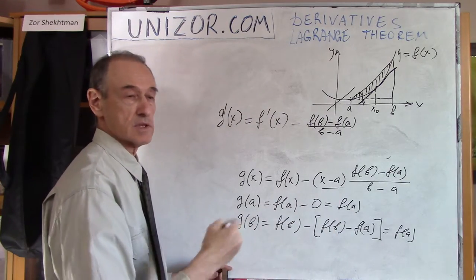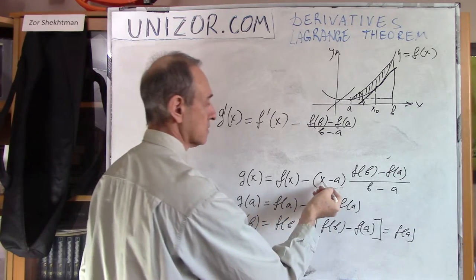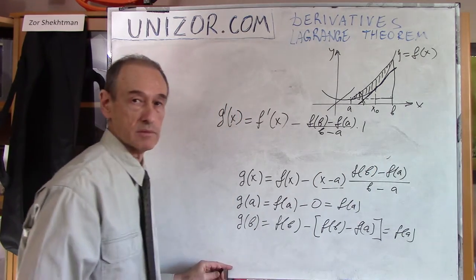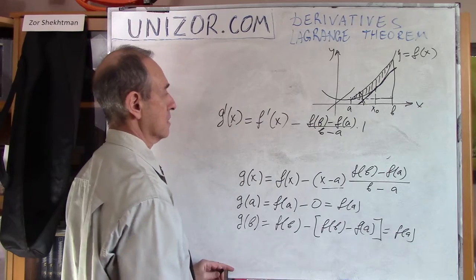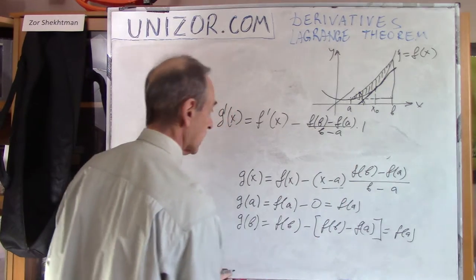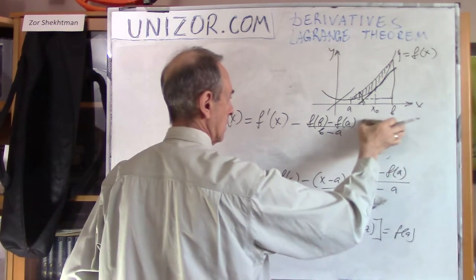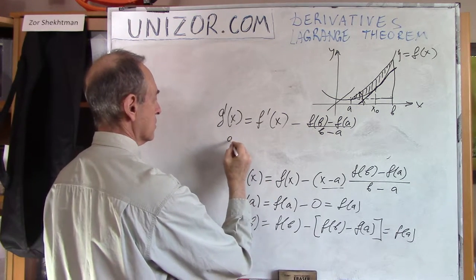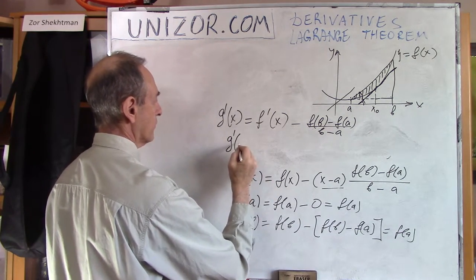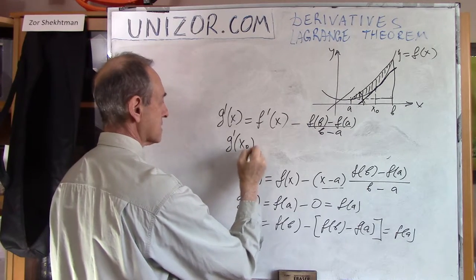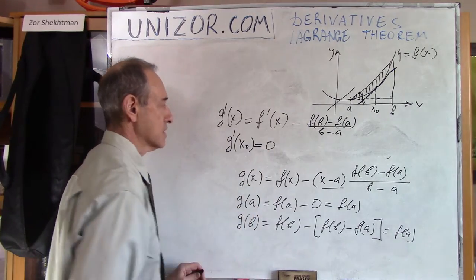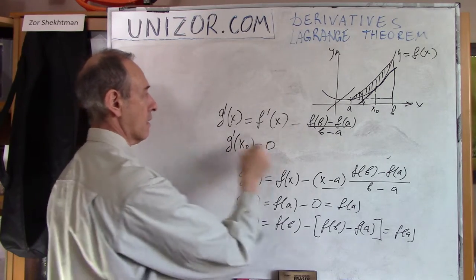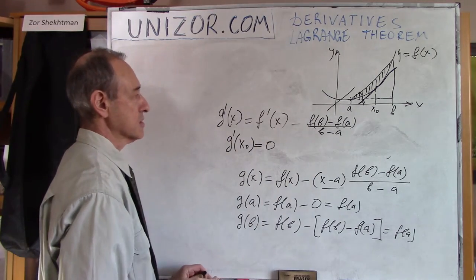Again, derivative of sum is sum of derivatives. So, it's basically derivative of x, which is 1. Because derivative of A is equal to 0, right? So, let's forget about this one. And we know that G derivative at point x0 equals to 0. So, there is some point x0 where this derivative is equal to 0.